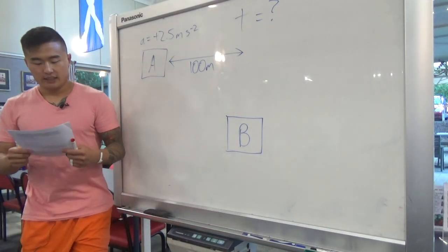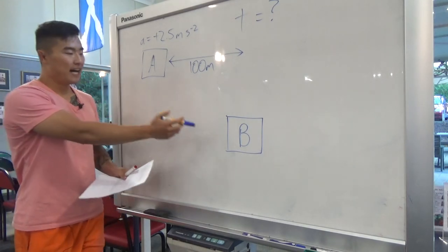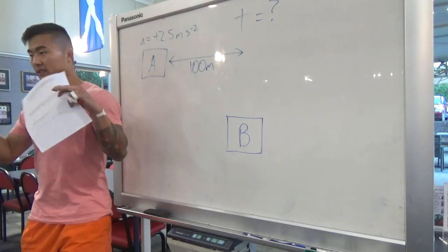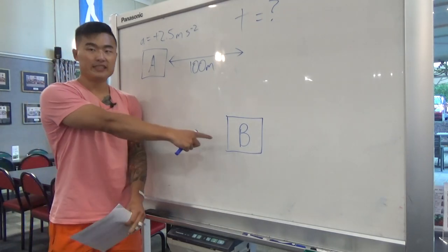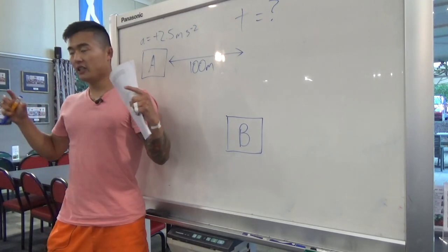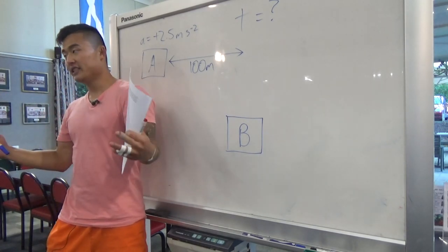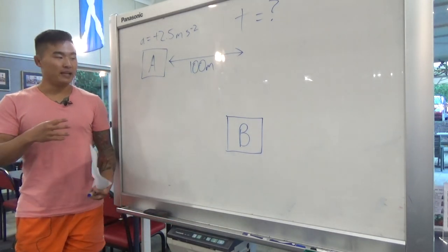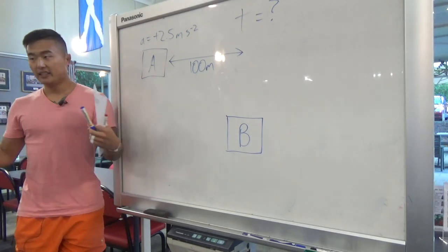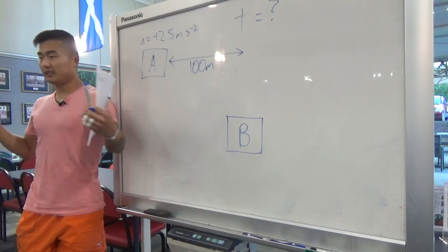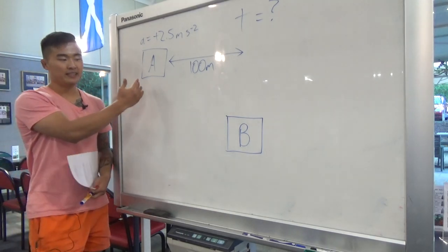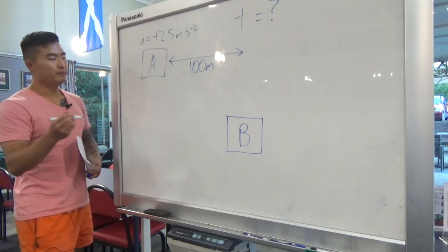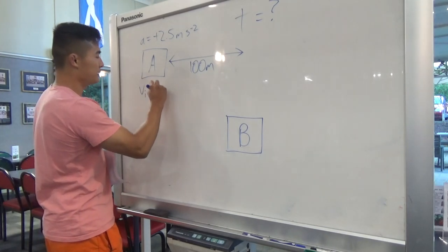The key thing here is that both cars have the same initial velocity of 20 meters per second. So if you think of it in terms of their relative velocity to each other, their relative velocity is zero because they're both going at the same initial velocity. You can simplify this problem by treating them as if they're both stationary — both having an initial velocity of zero meters per second.